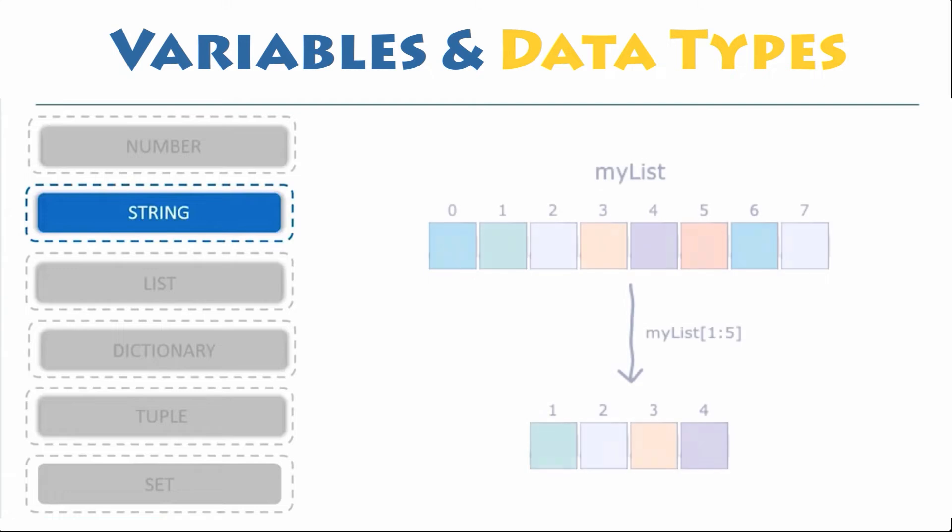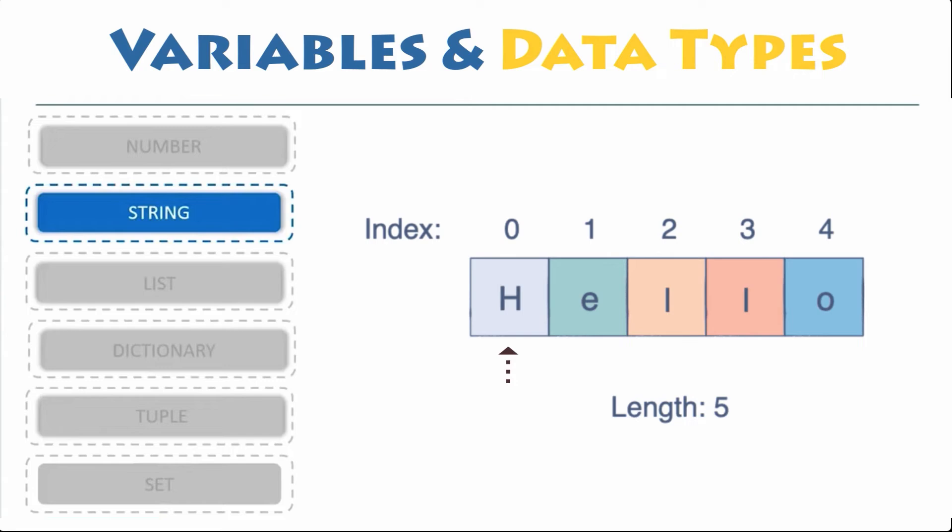Like lists and tuples, the slicing operator can be used with strings. To access the values in a string, we use indexes and square brackets.